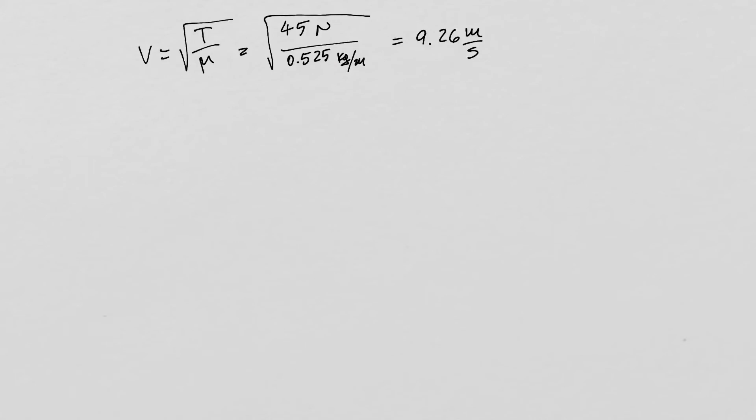So here I've converted the value of the linear mass density from grams per meter to kilograms per meter so that the units are compatible. And after doing the division and canceling all the appropriate units, I end up with 9.26 meters per second for the wave speed.